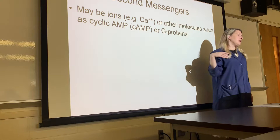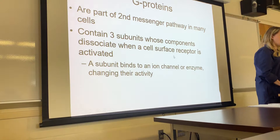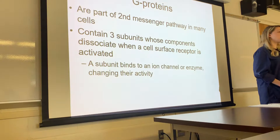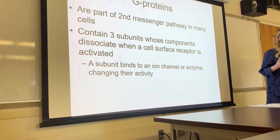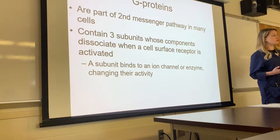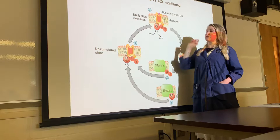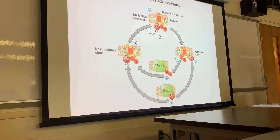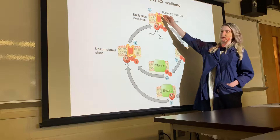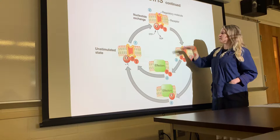Second messengers can be ions like calcium, other molecules such as cyclic AMP (cAMP), or G proteins. G proteins are made up of three protein subunits — named for the Greek letters alpha, beta, and gamma. They are covalently bonded together. We're looking at this generally now and will get more specific when we discuss the nervous system.